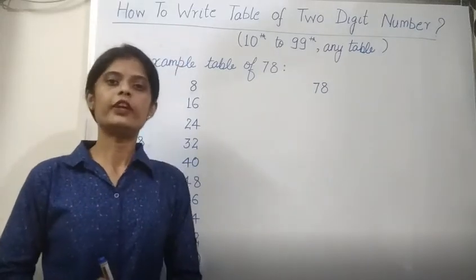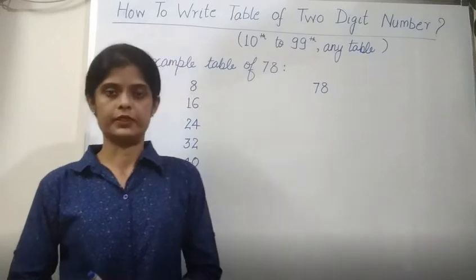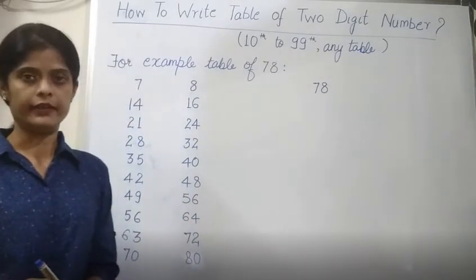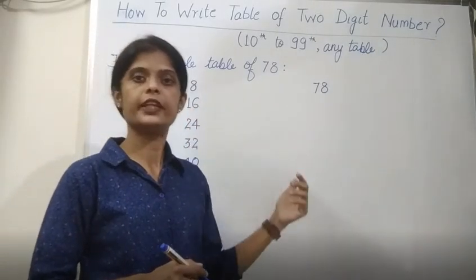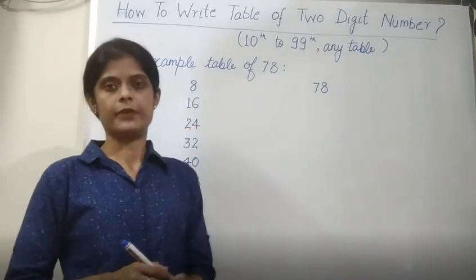Greetings friends, today we are going to learn how to write table of two digit numbers, that is from table of 10 to 99. Today we are going to learn how to write table of two digit numbers. This comes under basic mathematics.